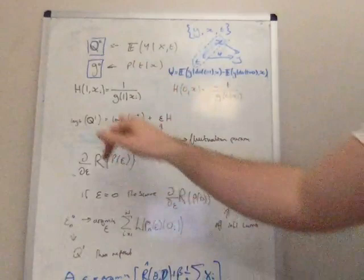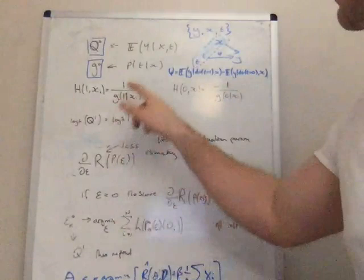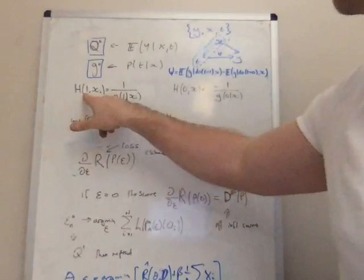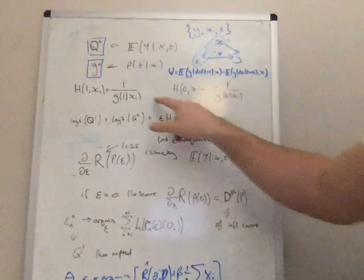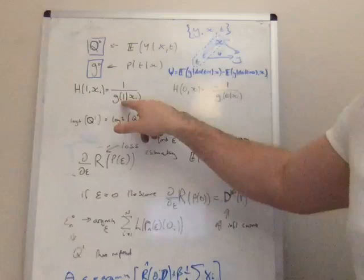They're also very similar to inverse probability treatment weights, where H is the name of this clever covariate. And we're looking at it for when treatment is assigned, one, and for when treatment is not assigned, zero. And it's going to be equal to one over the propensity score for that assignment of treatment or not assigned treatment for that individual i.